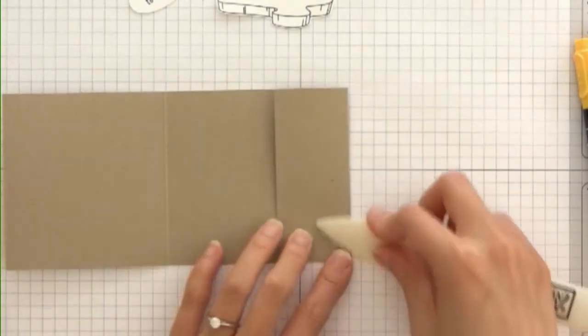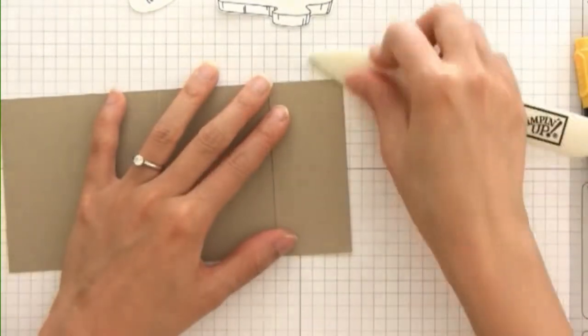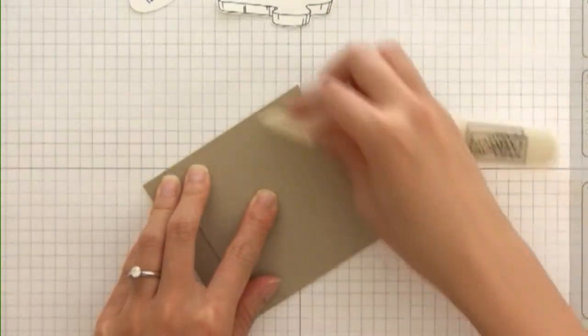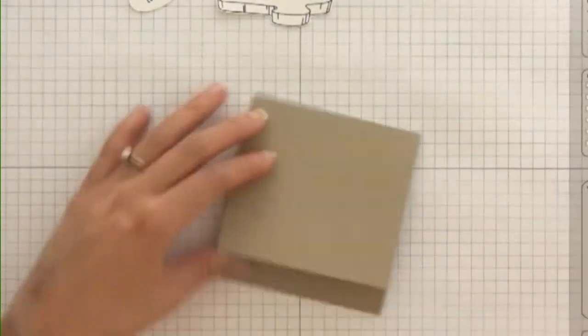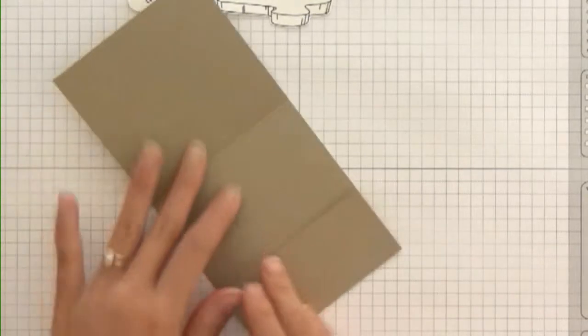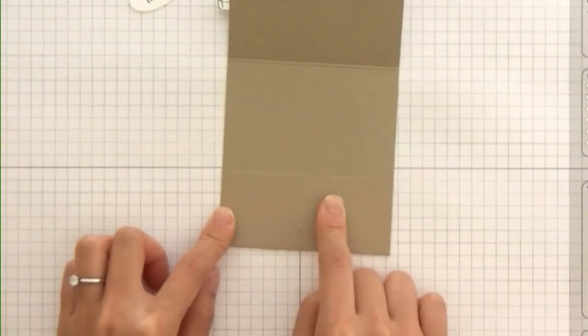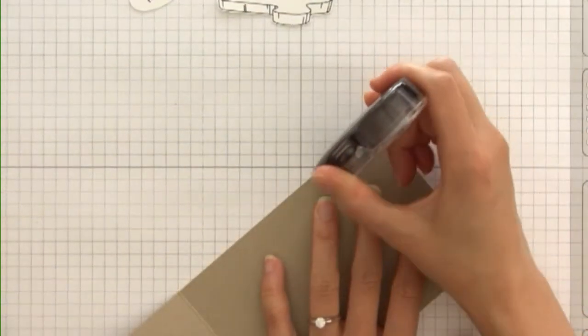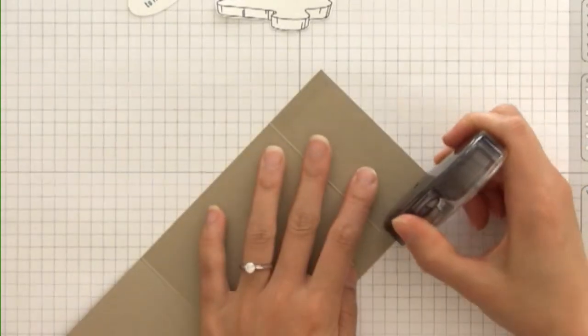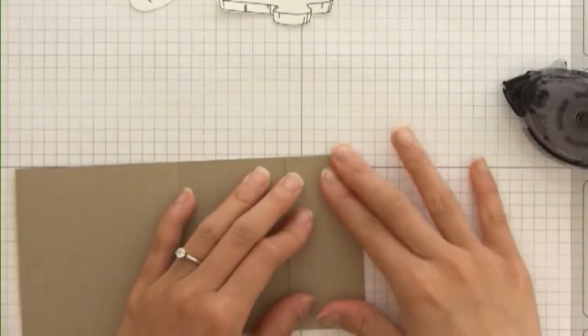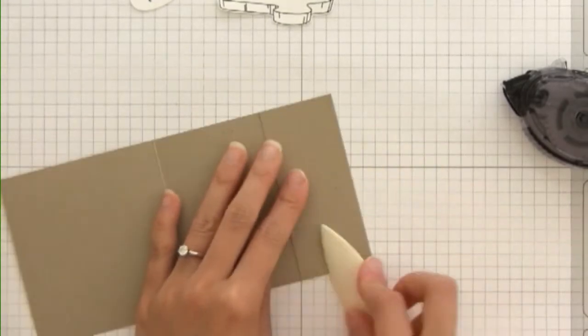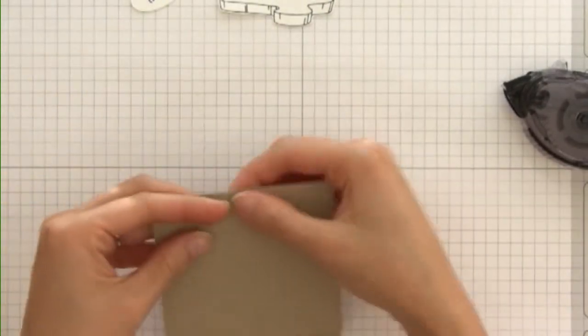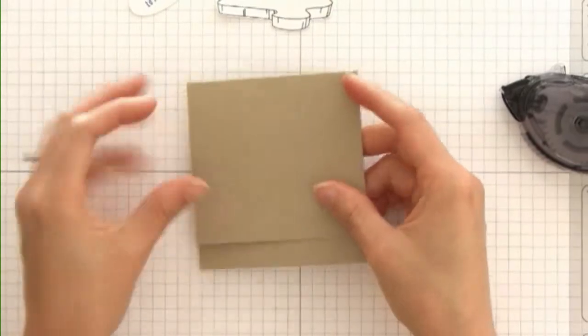Here you see I have it scored at 3¼ inches and then at 7 inches. I'm going to pre-fold that. This will be the pocket that holds the teabag. I'm going to take my adhesive and put it on the very edge of the pocket and then adhere that down.